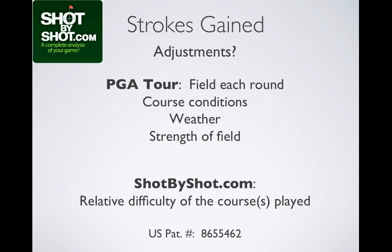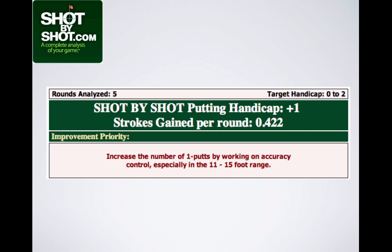Shot by Shot adjusts our strokes gained for the difficulty of the courses played as they compare to the averages in our database. We have developed a patented formula for making this important adjustment.